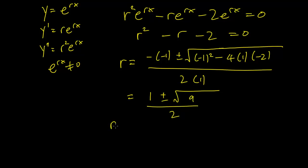So we have one solution r1 is just going to be 1 plus or minus 3 over 2. So r1 is just going to be 2. And r2 is just going to be minus 1. So these are our two solutions.